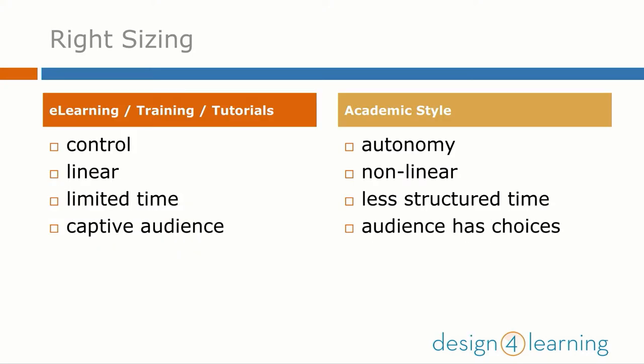Right-sizing is about more than just the content. This screen shows two ends of a spectrum of choices you will have to make. For example, e-learning units, vocational training, and tutorials commonly follow a linear timeline. They are often assigned for a limited time and the audience must consume the content in that time, possibly all in one sitting.